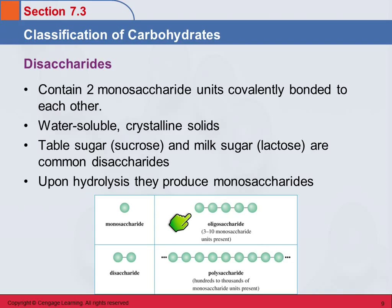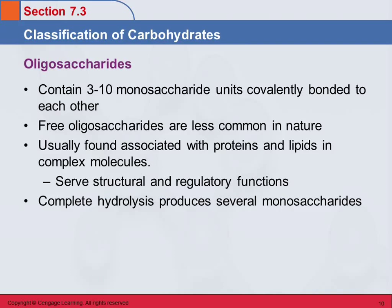Oligosaccharides and polysaccharides differ just in terms of how many monosaccharides are present. An oligosaccharide is in the middle — three to ten monosaccharide units, covalently bonded to each other. It's not common to find free oligosaccharides in nature; they're usually associated with proteins or lipids in complex molecules. If you do complete hydrolysis of an oligosaccharide, you'll end up with three to ten monosaccharides.